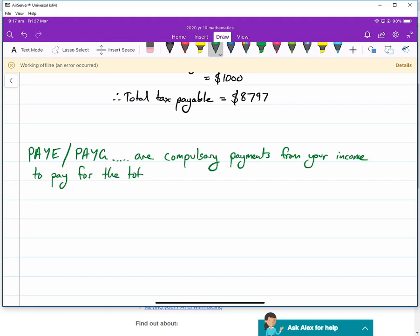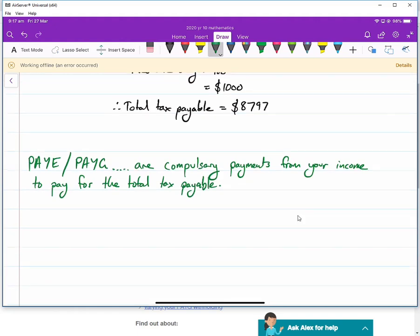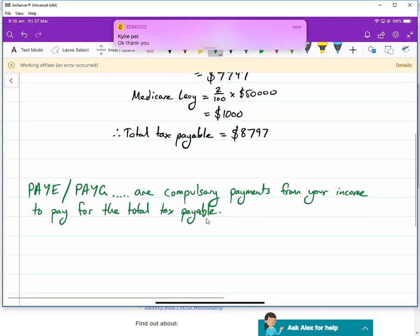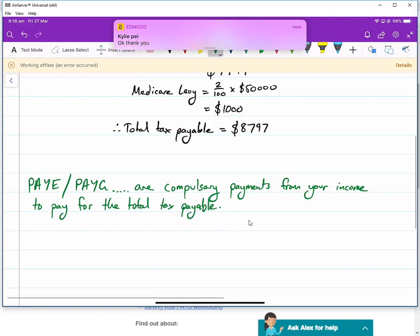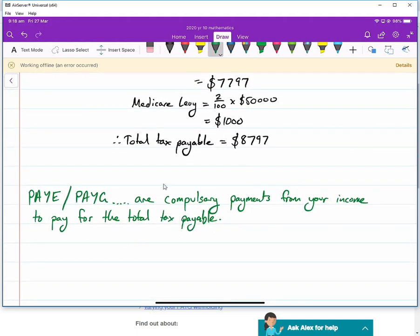Your employer actually has to, by law, take money out of your income every single pay slip for what is expected to be your total tax payable. The government knows exactly how much they think that you'll be paying in total tax. So they will take away this money through every single pay slip so that there is no tax payable at the end of the financial year. The problem is it's just a guess. At the end of the year, we actually check our balances. Sometimes you might have to pay the government more money, or sometimes the PAYG has been too much and you actually get some money back.